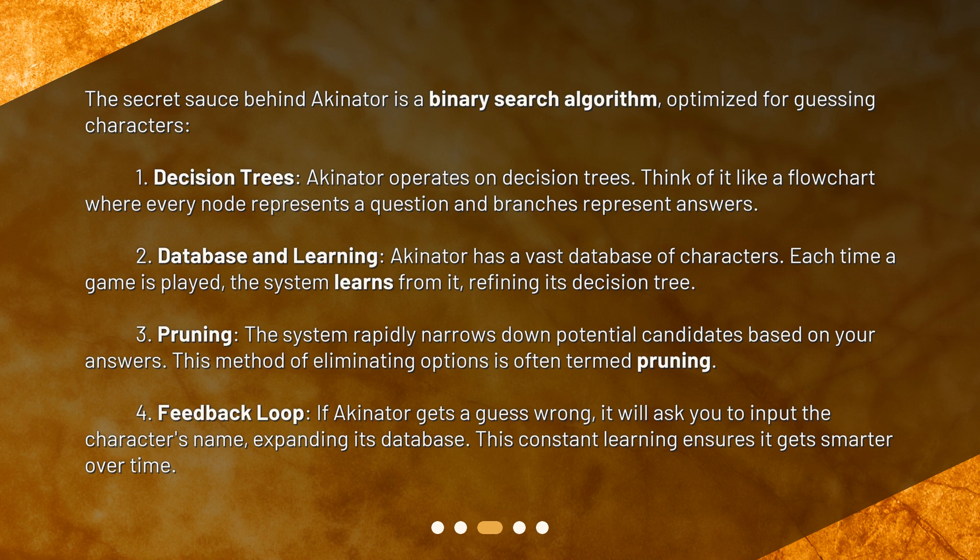1. Decision Trees: Akinator operates on decision trees. Think of it like a flowchart where every node represents a question and branches represent answers. 2. Database and Learning: Akinator has a vast database of characters. Each time a game is played, the system learns from it, refining its decision tree.